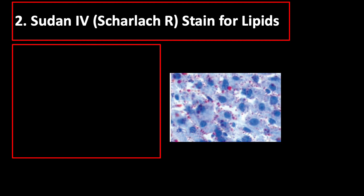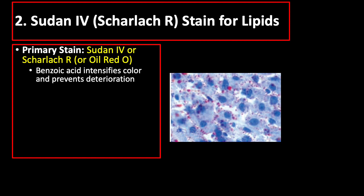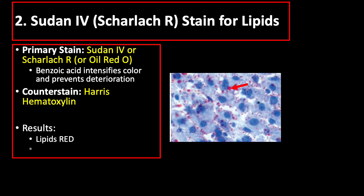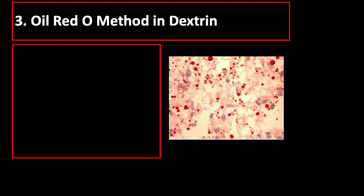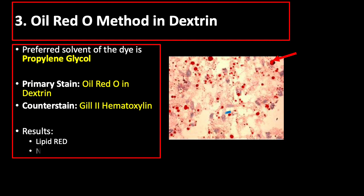The Sudan 4 stain for lipids uses Sudan 4, Scarlet R, or Oil Red O as primary stain. Benzoic acid may be added to the staining solution to intensify the resulting color and prevent deterioration; the counter stain used is Harris hematoxylin. The result shows red lipids and blue or black nuclei. The Oil Red O method in dextrin uses propylene glycol as the solvent, with Oil Red O in dextrin as primary stain and Gill-2 hematoxylin as counter stain, resulting in red lipid and blue nuclei.